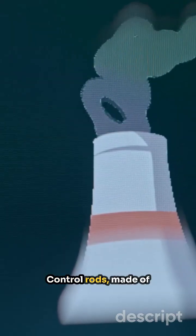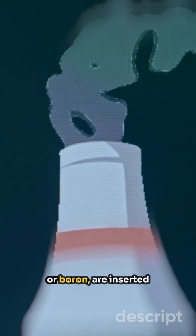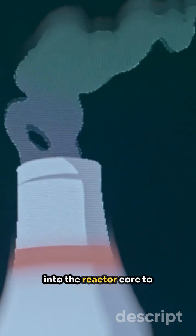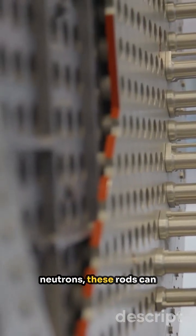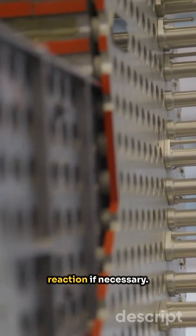Control rods, made of materials like cadmium or boron, are inserted into the reactor core to manage the fission rate. By absorbing excess neutrons, these rods can slow down or stop the reaction if necessary.